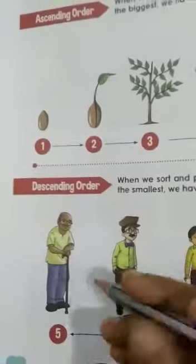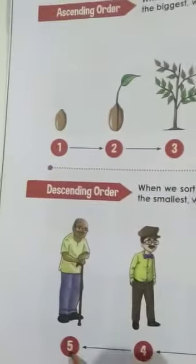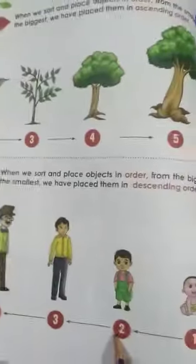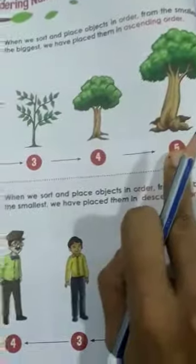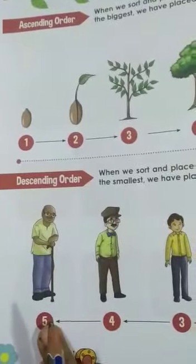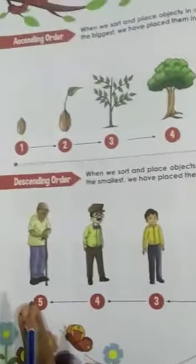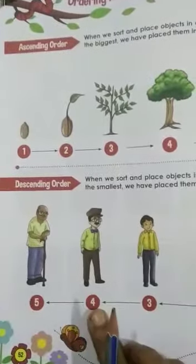This is called descending order. They have given the numbers 5, 4, 3, 2, 1. So when you arrange 5, 4, 3, 2, 1 — that is descending order. And 1, 2, 3, 4, 5 is ascending order. 1 is the smallest number and 5 is the biggest number. In descending order you write 5 first, then 4, 3, 2, 1. This is descending order and this is ascending order.